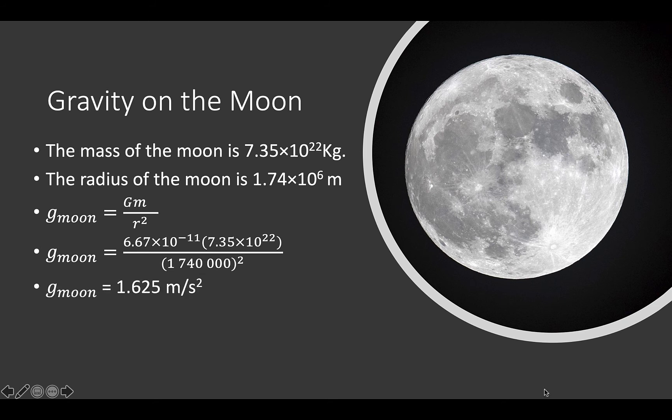We calculate that the gravity on the moon is 1.625 meters per second squared. This is approximately 17% of that of Earth, 9.8 meters per second squared.